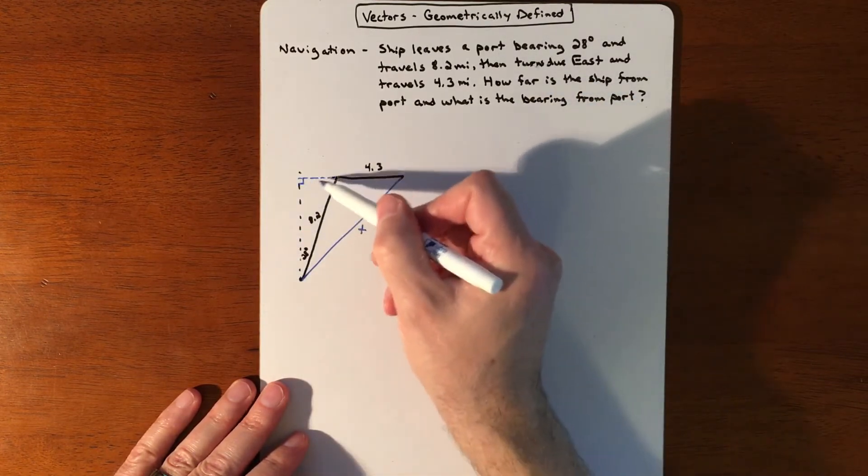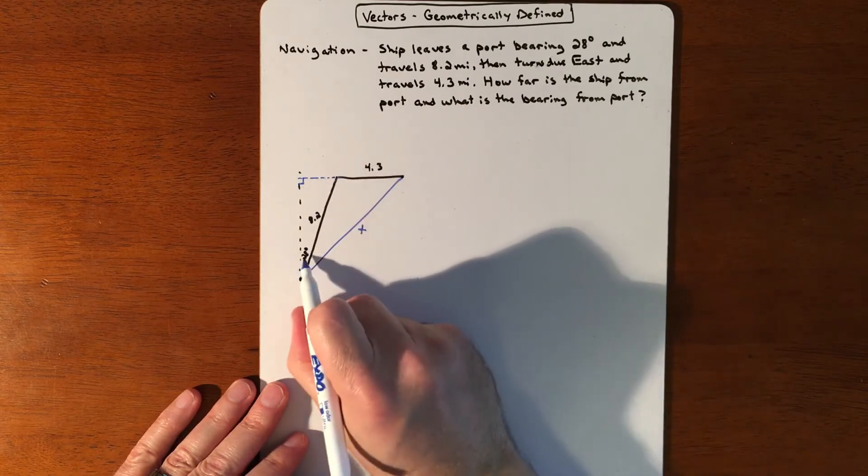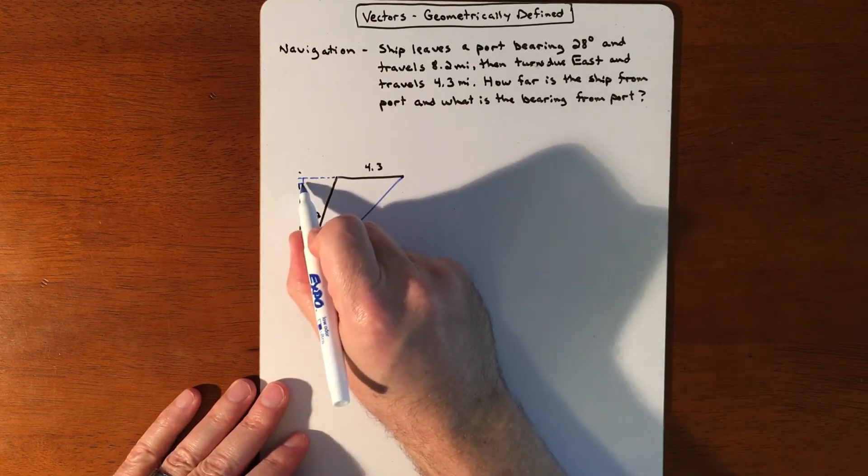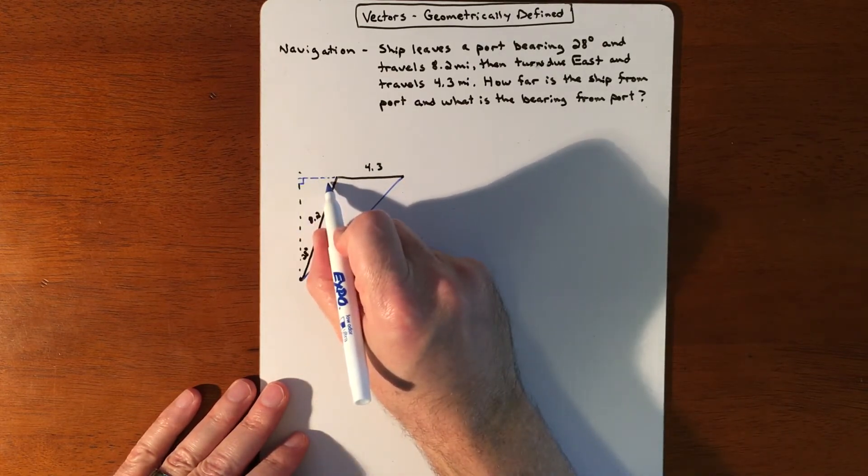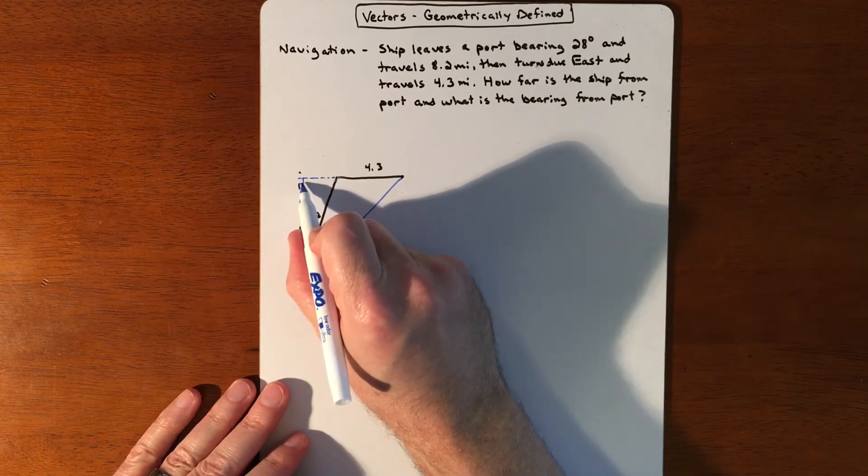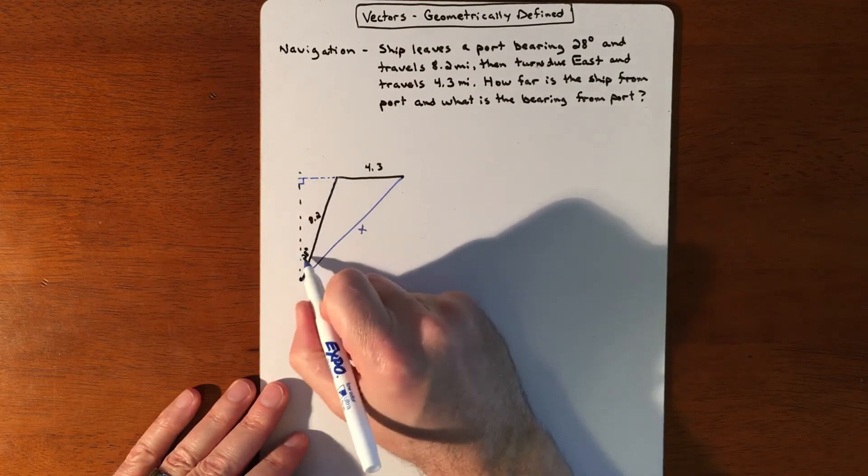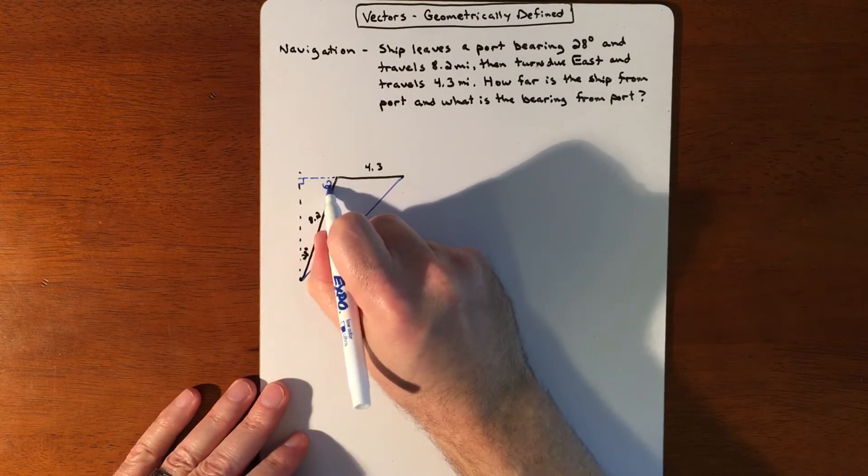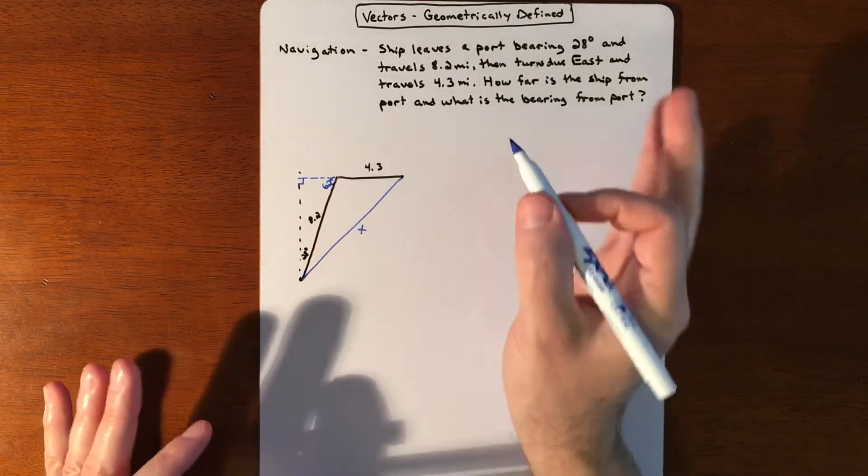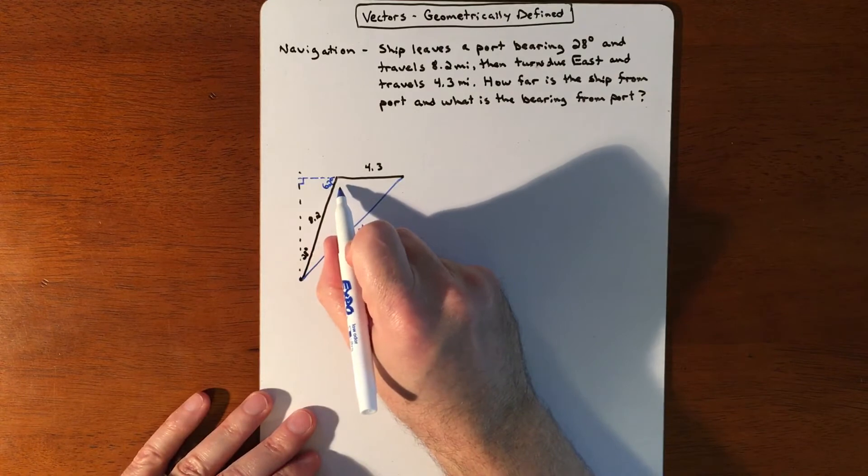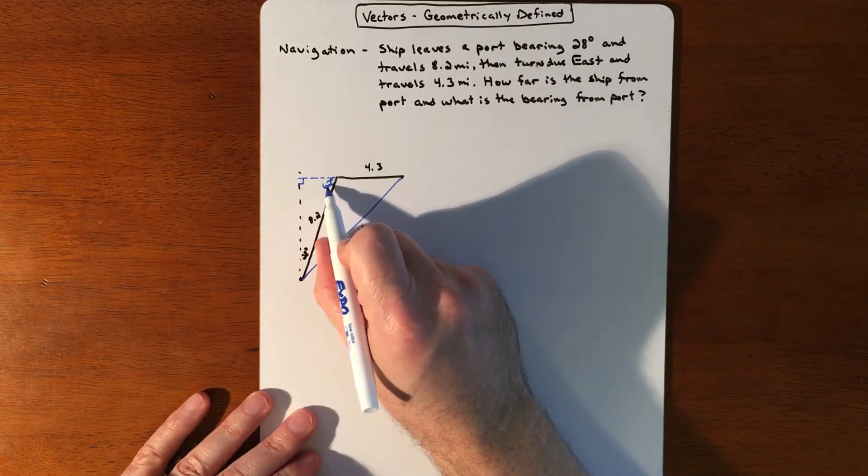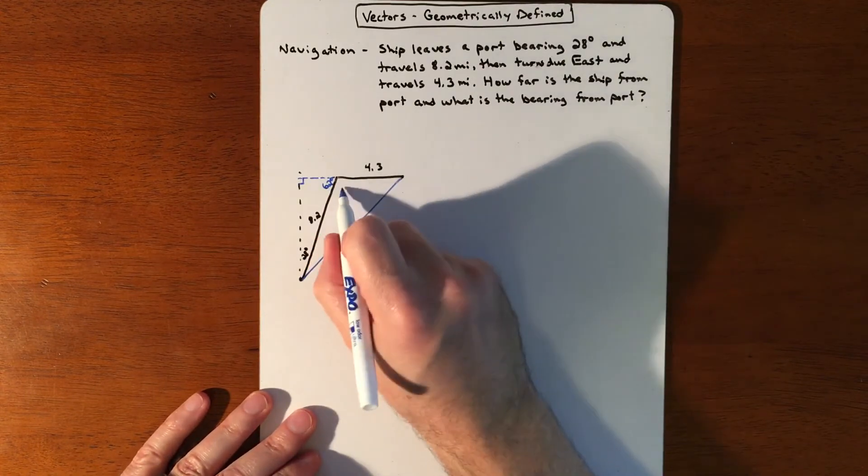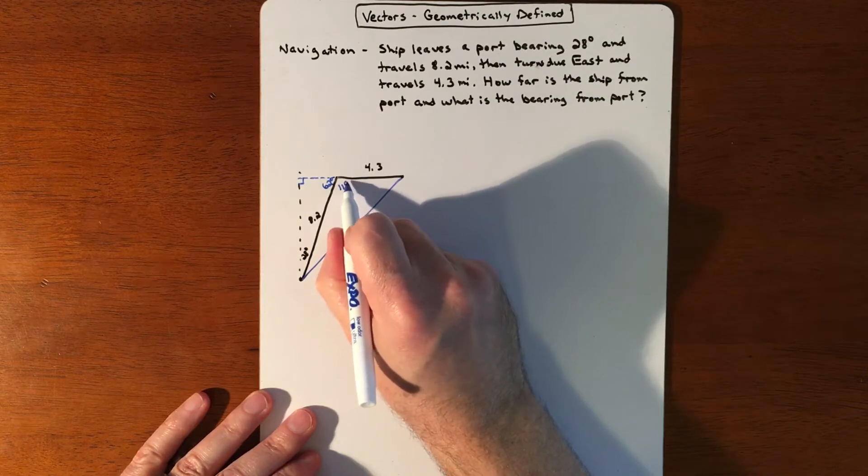So just this triangle, we can grab that angle and the 90 and we can figure out what this is. So if we take 180, subtract 90, we got 90. And then if we subtract 28, that leaves us with 62 degrees, which is good because that angle will help us find this angle. So if we take 180 minus 62, that leaves us with 118.